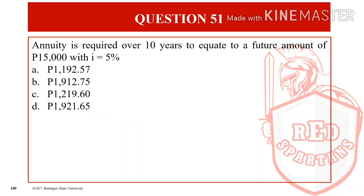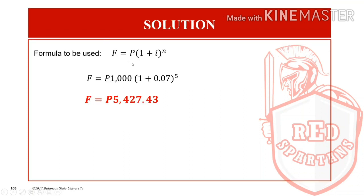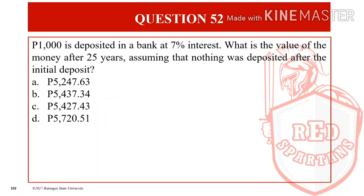For question number 52, P1,000 is deposited in a bank at 7% interest. What is the value of the money after 25 years, assuming nothing was deposited after the initial deposit? Choices: A: P5,247.63, B: P5,437.34, C: P5,427.43, D: P5,720.51. Using the compound interest formula F = P × (1 + I)^N, substituting P1,000 at 7% for 25 years gives F = P5,427.43, letter C.